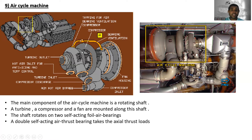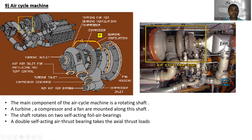Now the air cycle machine, which is very important. You can see the turbine outlet, hot air inlet for anti-ice and temperature control, turbine inlet duct, compressor discharge, hot air pressure bypass duct, compressor inlet, fan housing, bearing ventilation, and compressor tapping for air bearing ventilation. The main components of the air cycle machine are a rotating shaft, a turbine, a compressor, and a fan mounted along the shaft. The shaft rotates on two self-acting foil air bearings, and a double self-acting air thrust bearing takes the axial thrust load.